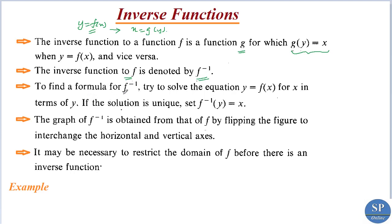To find the formula for f inverse, we have to solve the equation y equal to f of x for x in terms of y. We solve this equation for x in terms of y and get x equal to another function of y. If that solution is unique, then we set f inverse of y equal to x. The graph of f inverse is obtained from that of f by flipping the figure to interchange the horizontal and vertical axes.